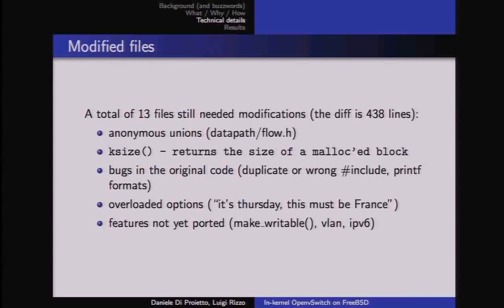Linux's memory allocator has a feature called ksize, which returns the actual allocated block size — which may be larger than requested. The OpenVSwitch code uses this to extend blocks without reallocating. FreeBSD has no equivalent, so we added conditional code in the affected sections. Implementing ksize in FreeBSD was attempted but met with resistance, so the workaround remains.